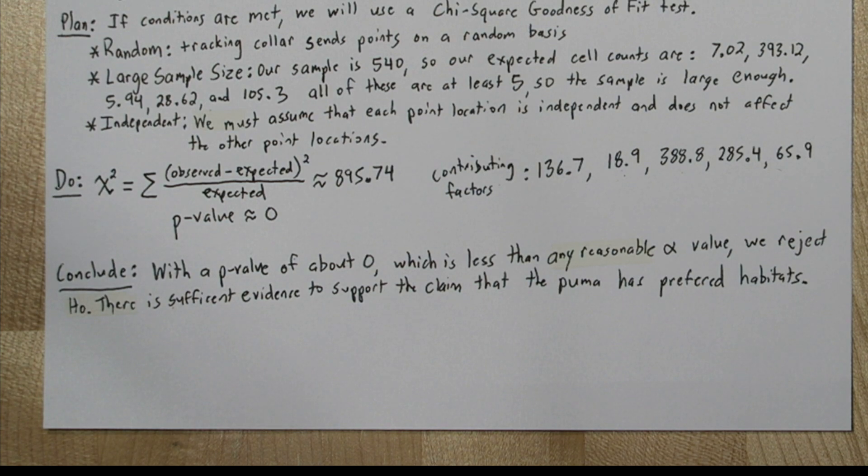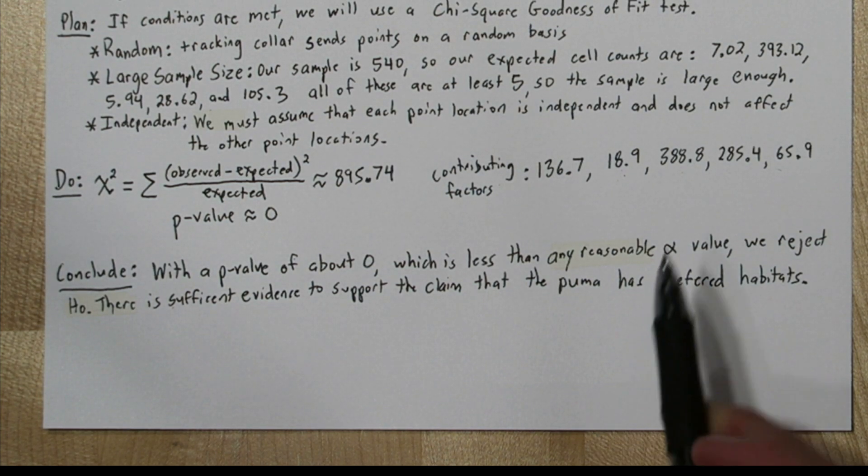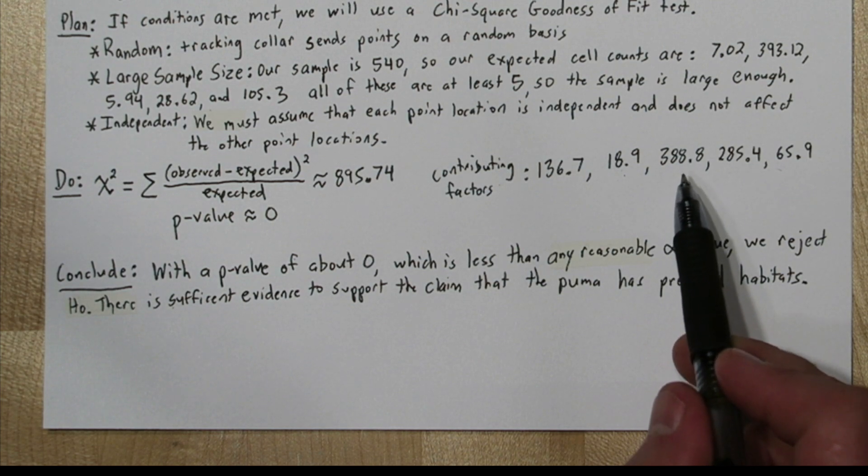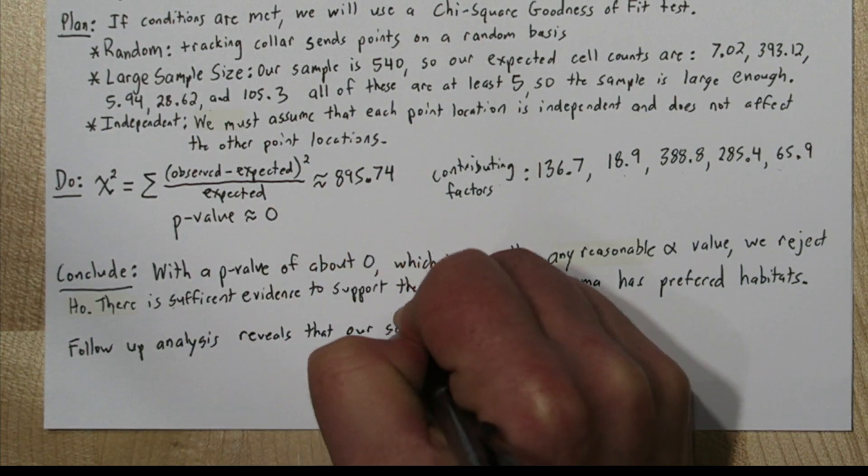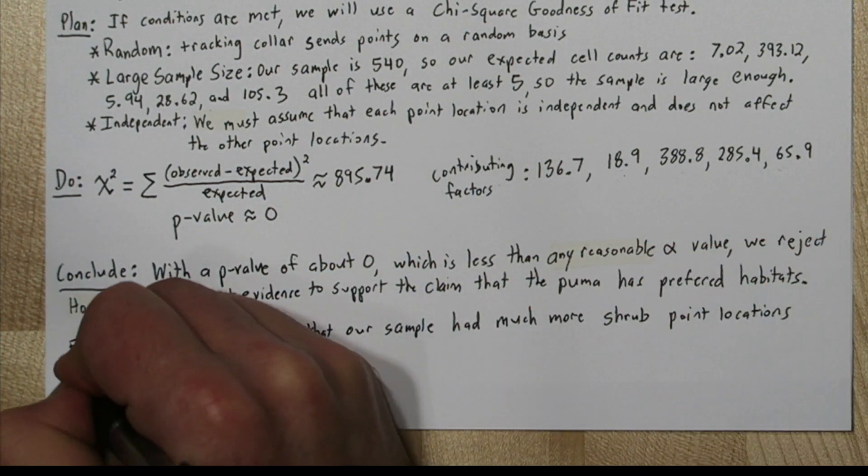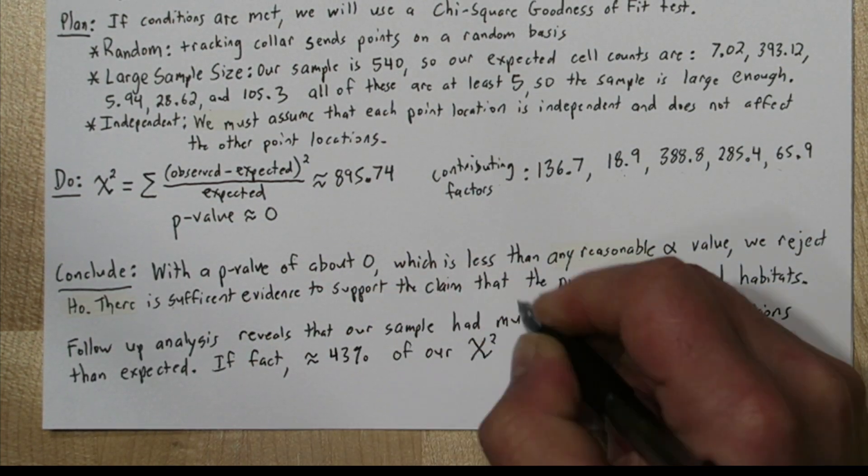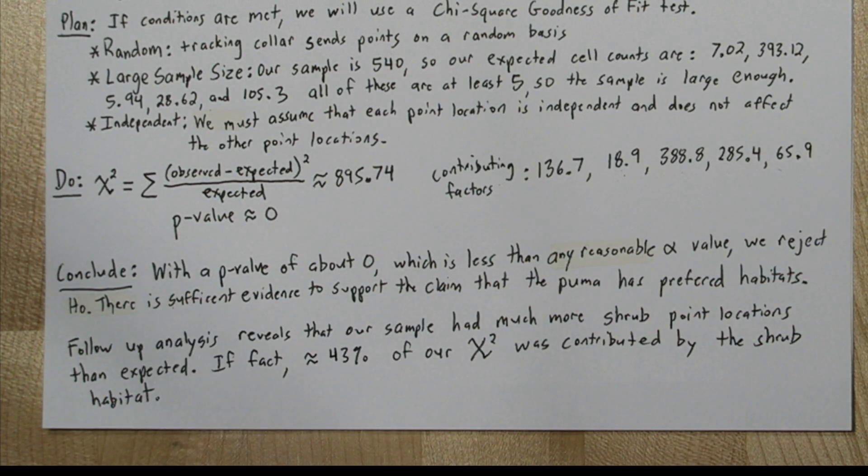So that's a lot of evidence that it has a preference for habitat. If we divide this 388.8 by our total chi-square test statistic, we can see that about 43% of our chi-square was contributed by the shrub habitat.